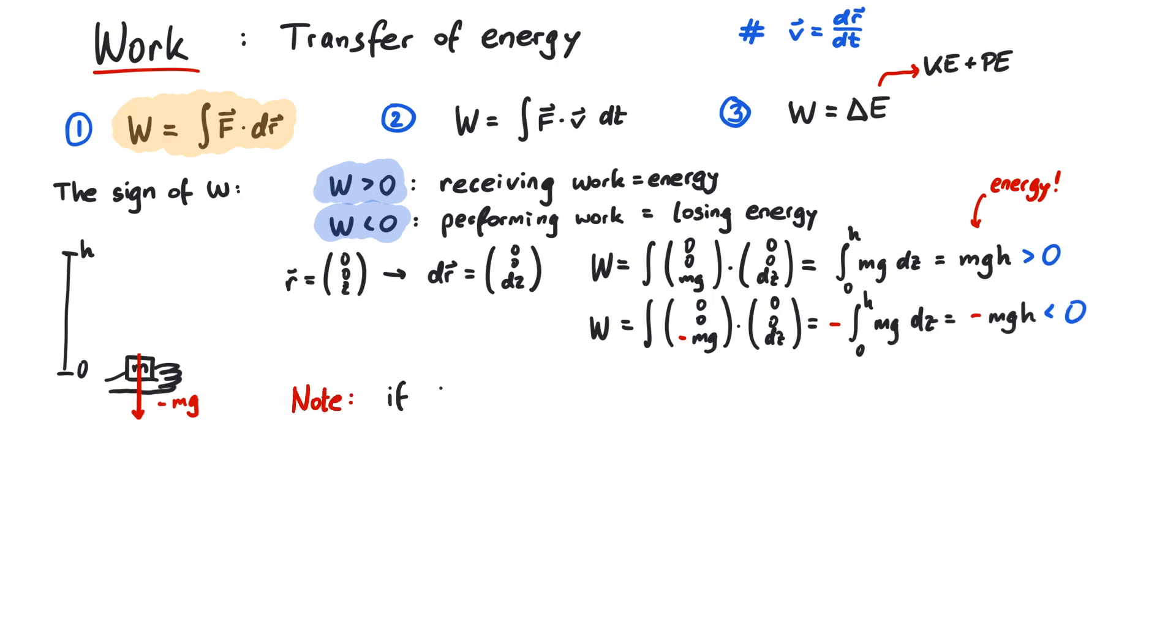Note that if the force vector and dr are perpendicular to each other, then no work is being performed. If you carry something from point A to point B, where A and B are on the same altitude, then you might be exhausted, but in the physical sense you haven't been doing any work. So now that we know about work, we can also talk about power. Power is a measure for how much work has been performed in a certain time.